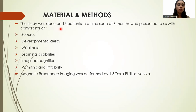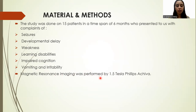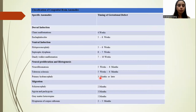The study was done on 15 patients over a time span of 6 months, who presented with complaints of developmental delay, weakness, learning disabilities, impaired cognition, vomiting, and irritability. MRI was performed using a 1.5 Tesla Philips Achieva.